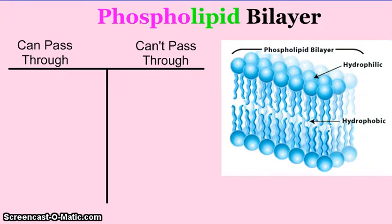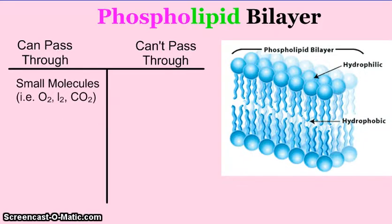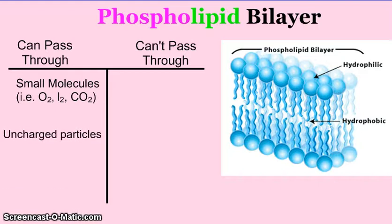So what can pass through the phospholipid bilayer? Remember, it's a selective membrane, so it does have openings that allow certain molecules through. It allows small molecules — for example, oxygen, iodine, and carbon dioxide — which can slip through the small holes in the phospholipid bilayer and enter or exit the cell through diffusion from high concentration to low. The other kind of thing that can move through is uncharged particles, meaning they have no positive or negative charge.